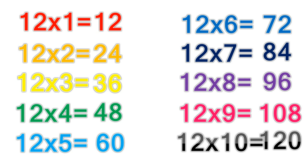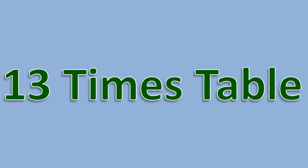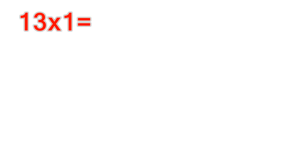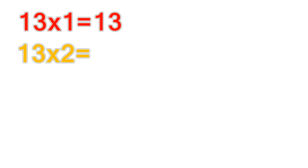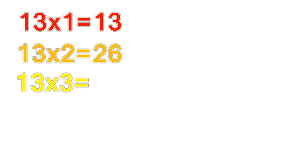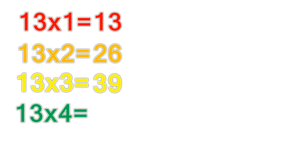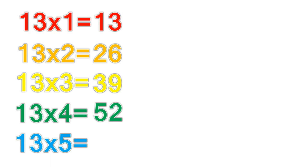13 times table. 13 times 1 equals 13. 13 times 2 equals 26. 13 times 3 equals 39. 13 times 4 equals 52. 13 times 5 equals 65.